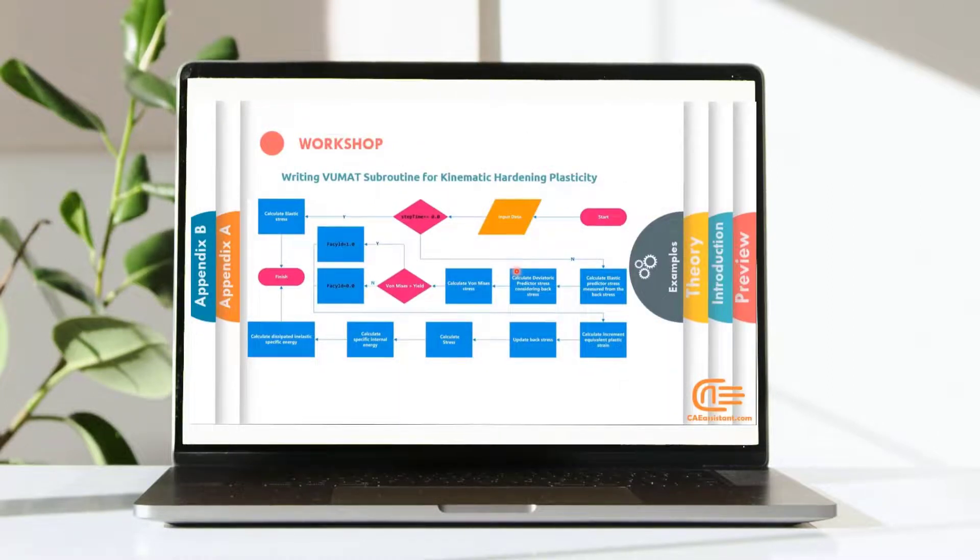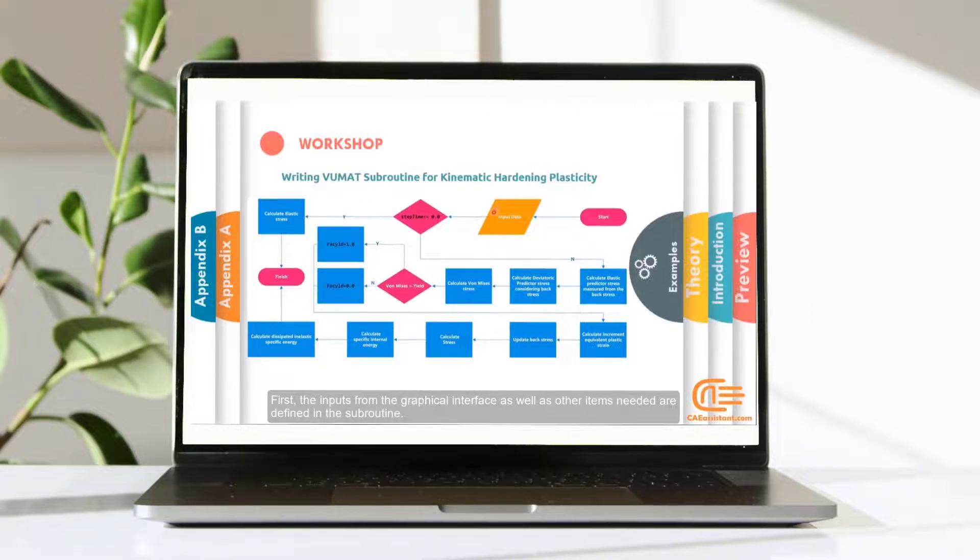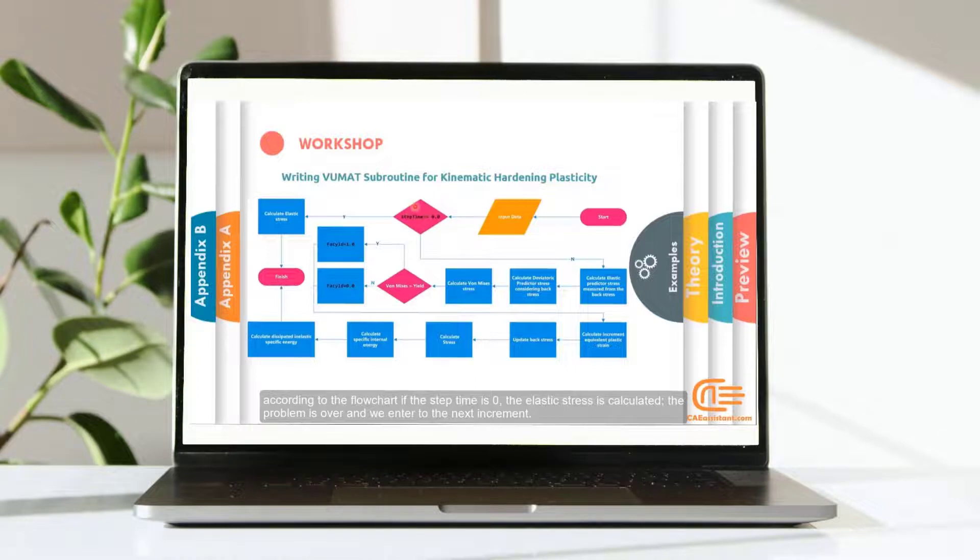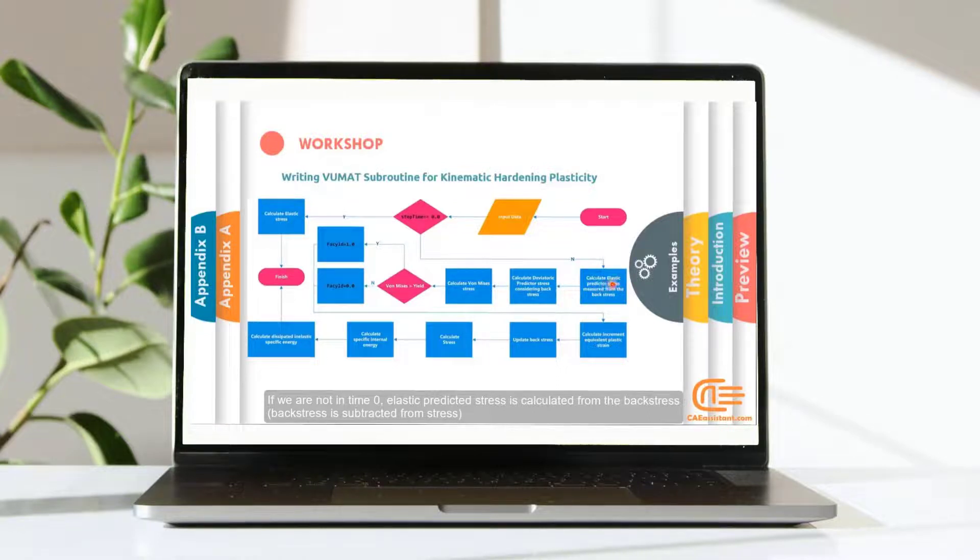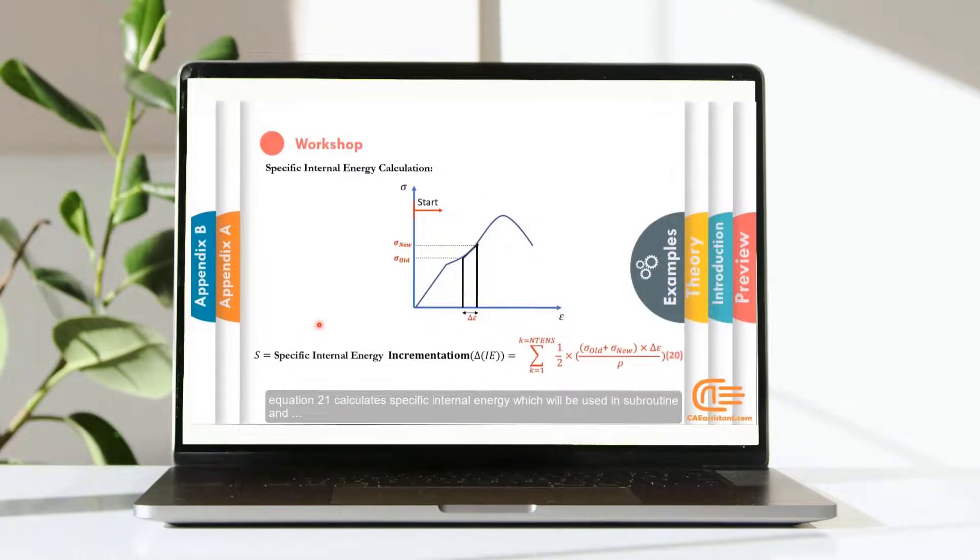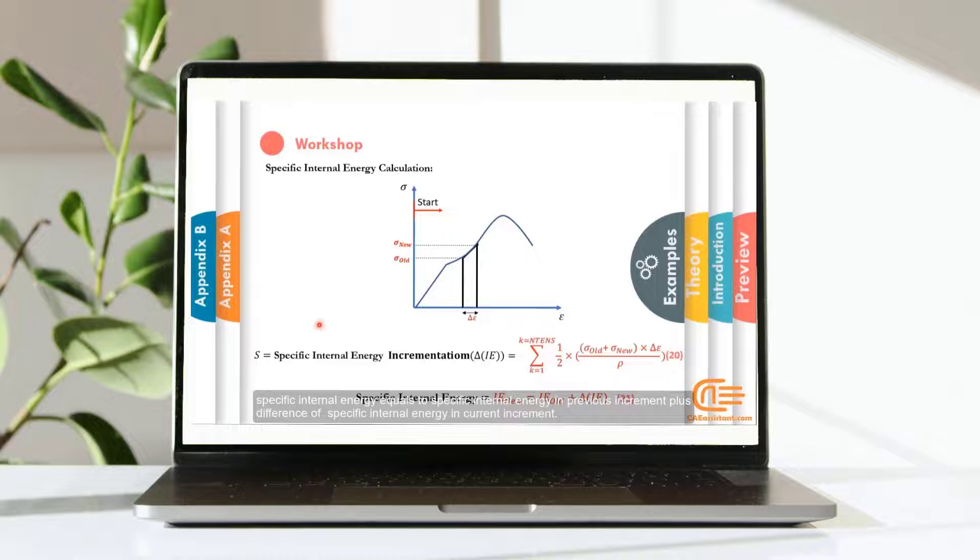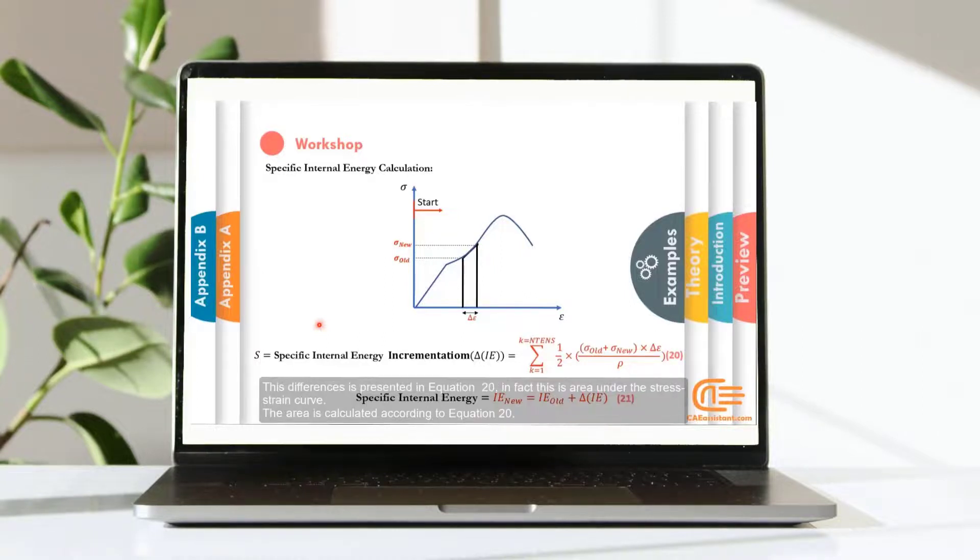First, the inputs from the graphical interface as well as other items needed are defined in the subroutine. According to the flowchart, if the step time is zero, the elastic stress is calculated. The problem is over and we enter the next increment. If we are not in time zero, elastic predicted stress is calculated from back stress. Back stress is subtracted from stress. Equation 21 calculates specific internal energy, which will be used in subroutine. And specific internal energy equals to specific internal energy in previous increment plus difference of specific internal energy in current increment. This difference is presented in equation 20. In fact, this is area under the stress strain curve. The area is calculated according to equation 20.